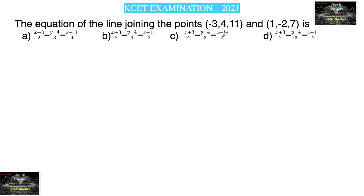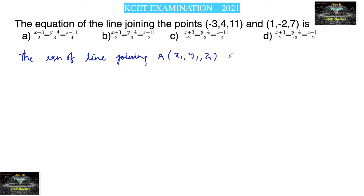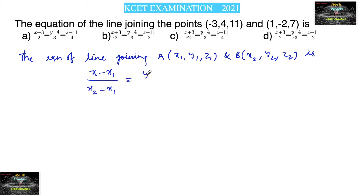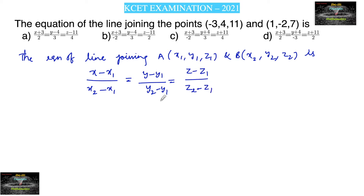The equation of the line joining the points. The equation of line joining say A(x1, y1, z1) and B(x2, y2, z2) is given by: (x - x1) / (x2 - x1) = (y - y1) / (y2 - y1) = (z - z1) / (z2 - z1). This is the equation of a line, or it can also be given as (x - x1)/a = (y - y1)/b = (z - z1)/c.